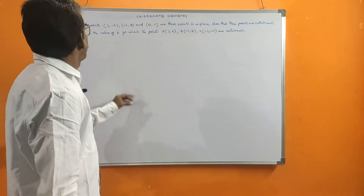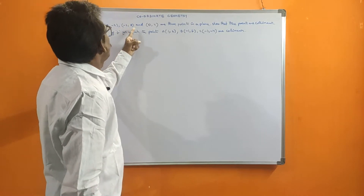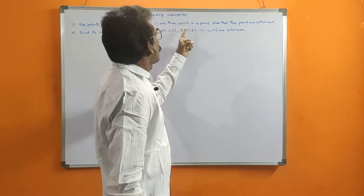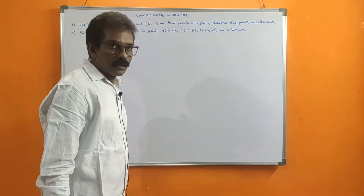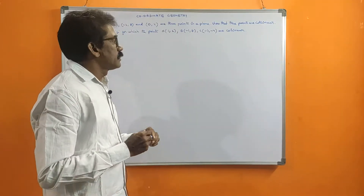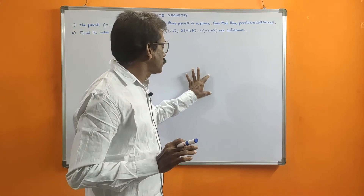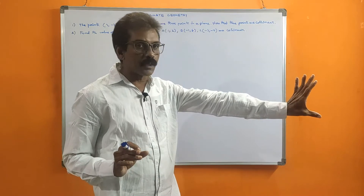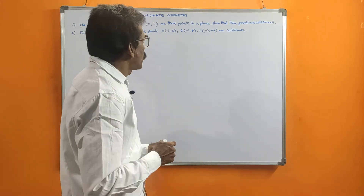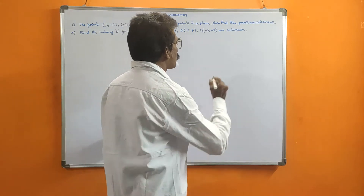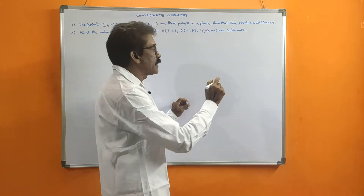The first problem: the points (3, -2), (-2, 8), and (0, 4) are three points in a plane. We need to show that these three points are collinear. Plane means on the same surface. Collinear means they lie on a straight line.